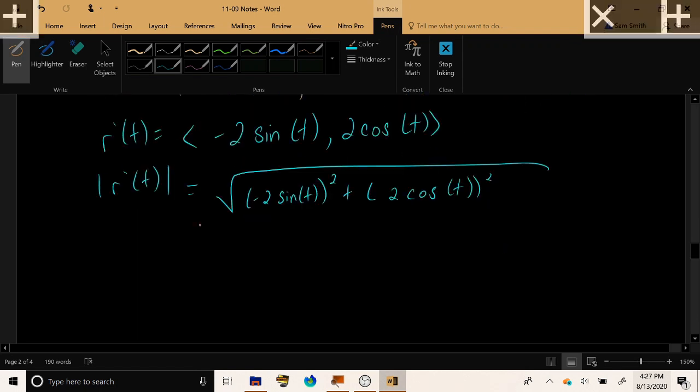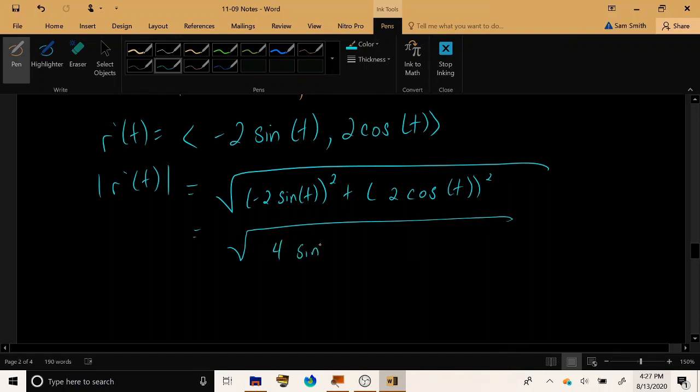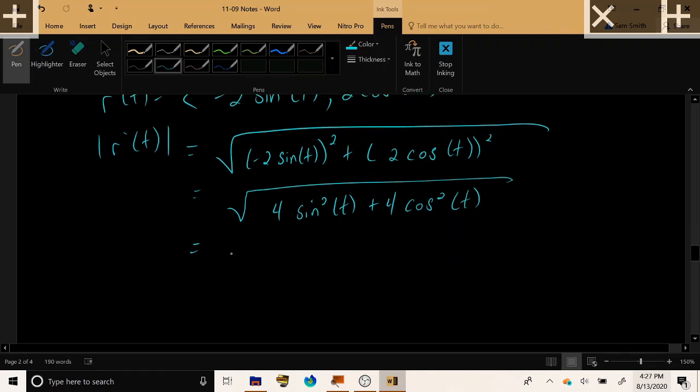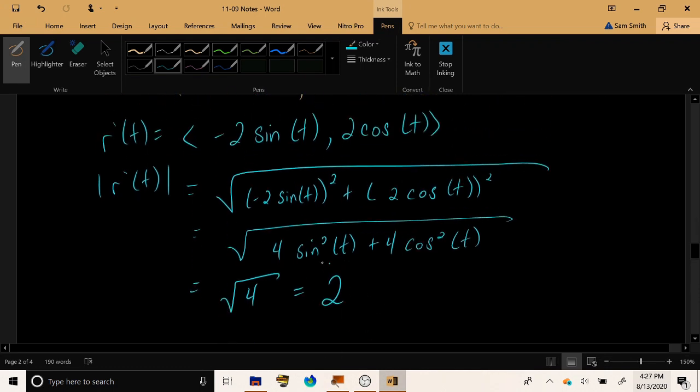Which gives us, after a little simplification, 4 sine squared t, plus 4 cosine squared t. Now, sine squared plus cosine squared always reduces to 1. So, in total, this quantity reduces to 4, root 4 being 2. And so, here is the speed that we're using as part of our integrand.